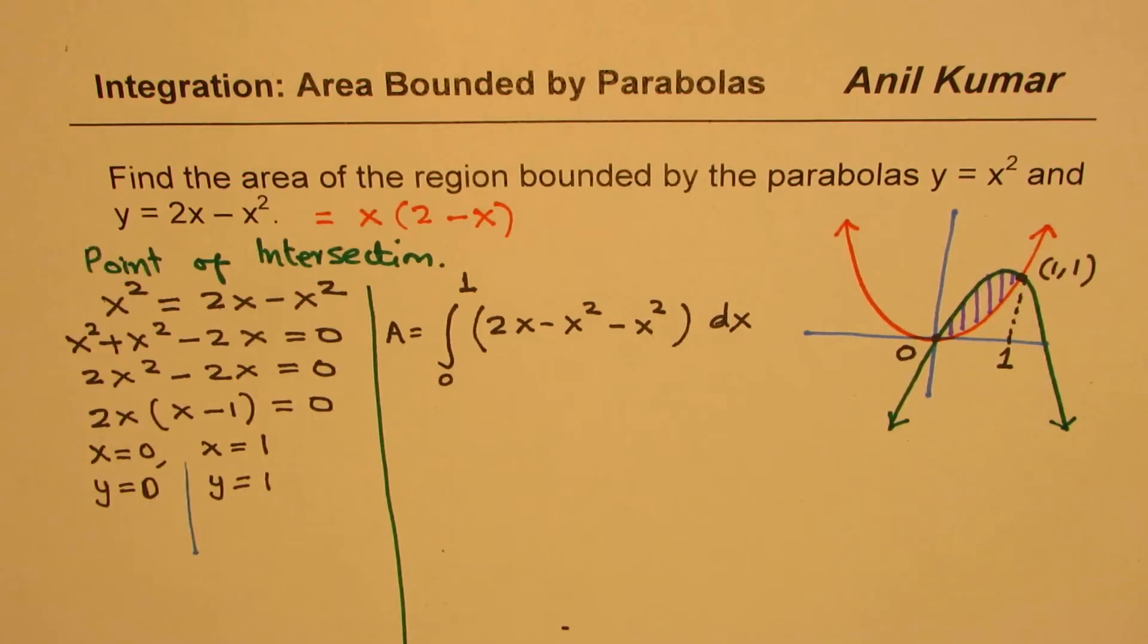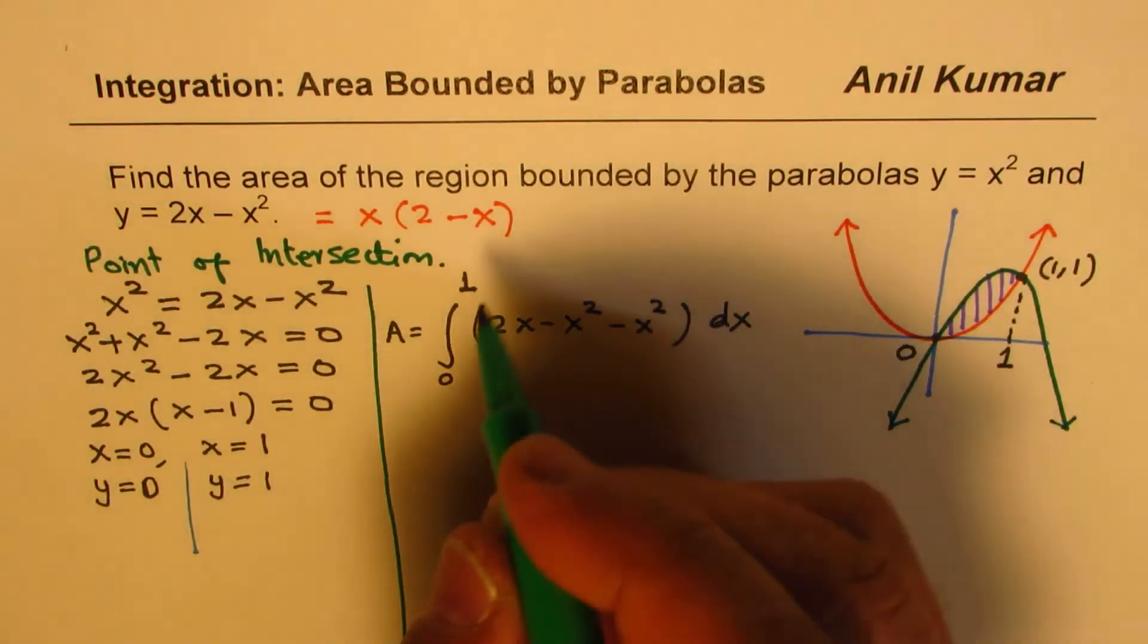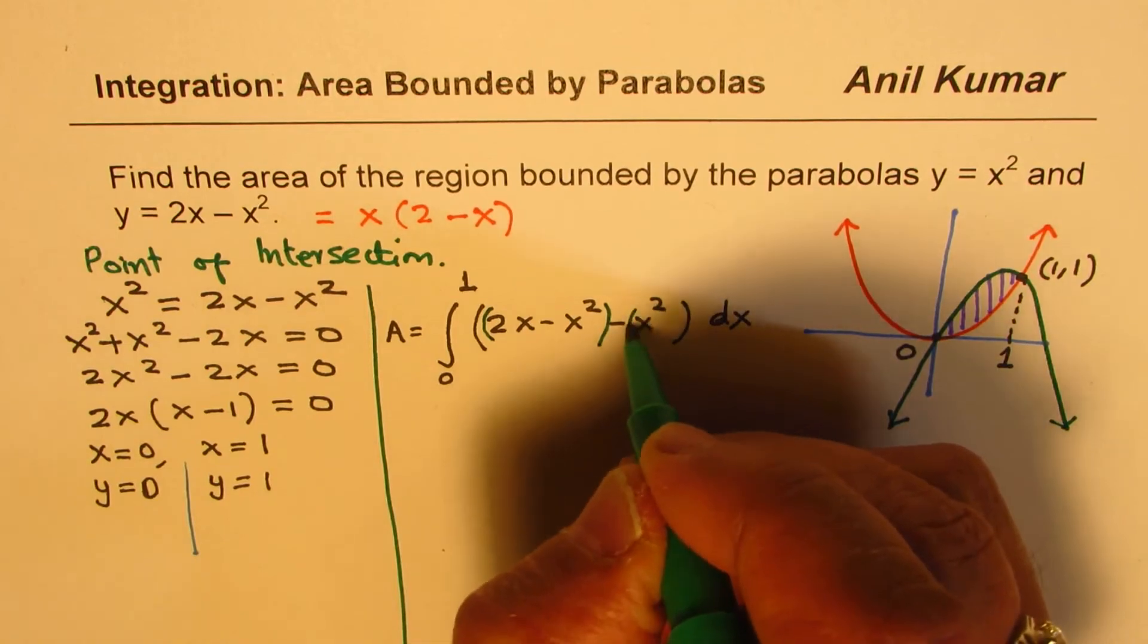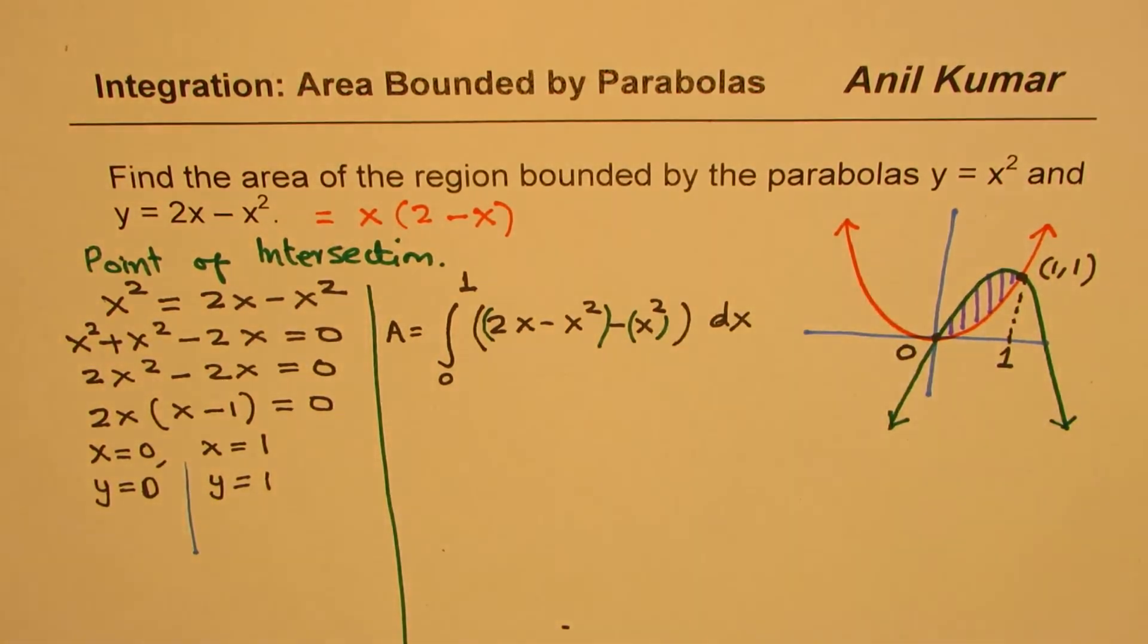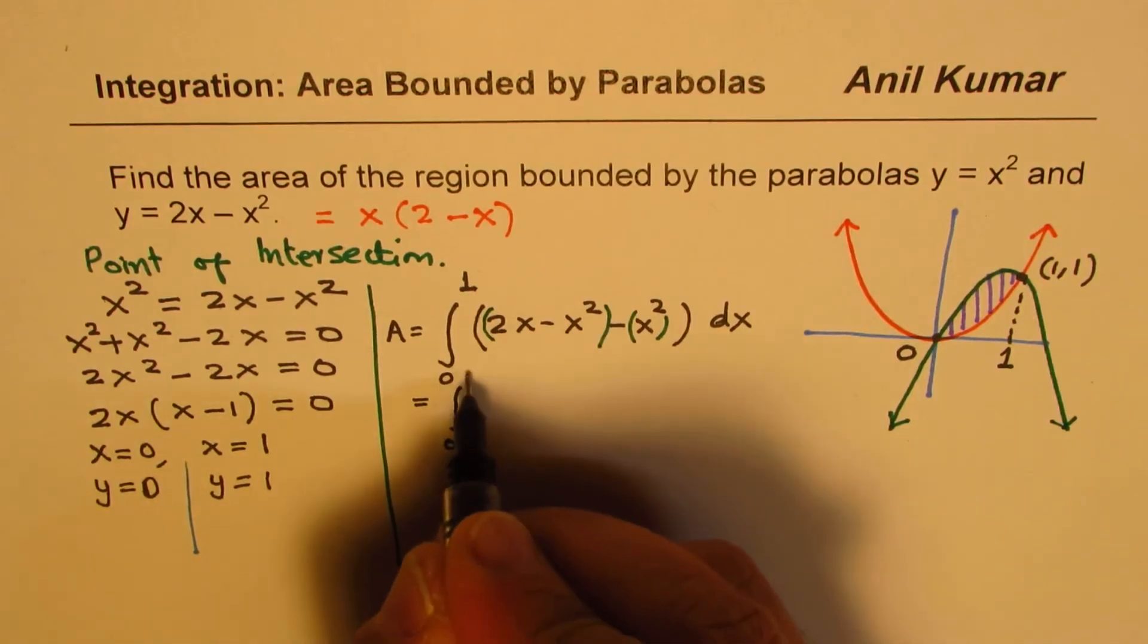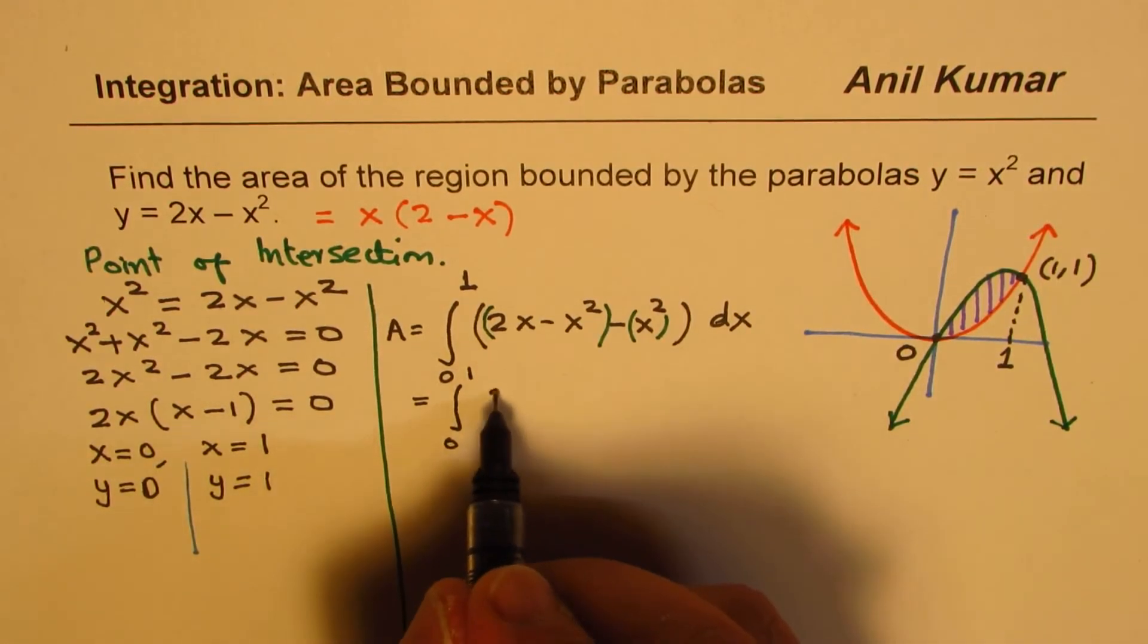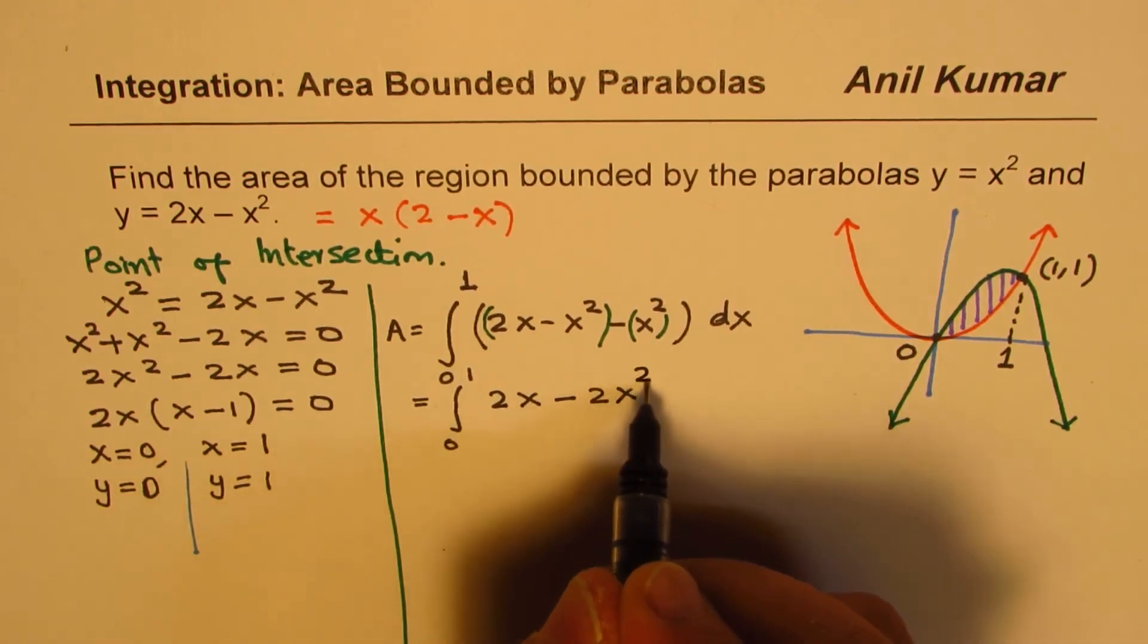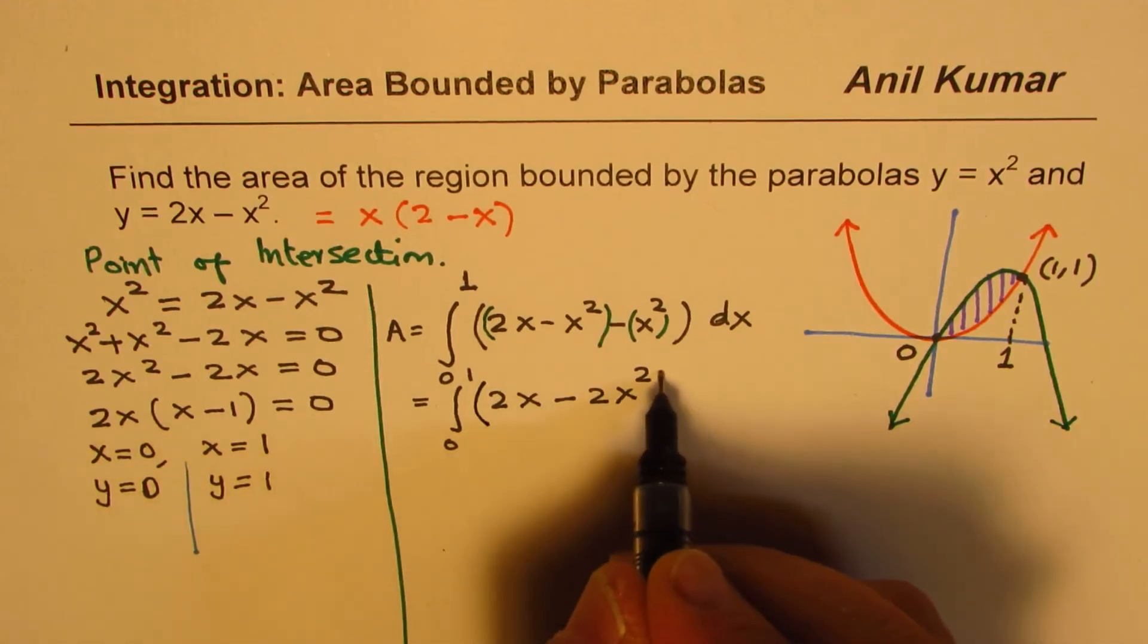So this is the, this is one of the parabolas, and that's the other one. Now that is equal to integral from 0 to 1, 2x minus 2x squared dx.